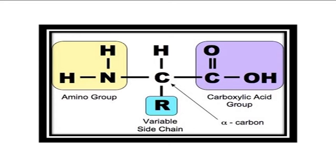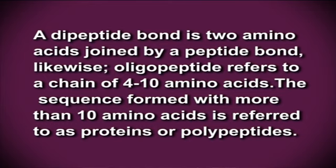Primary structure. Amino acids, as the name itself indicates, contain both a basic amino group (NH2) and an acidic carboxylic group (COOH). The di-functionality of these two groups allows the individual amino acids to join together in long chains by forming peptide bonds. It is the bond which is formed between the amino group (NH2) of one amino acid to the carboxylic group (COOH) of another amino acid. A di-peptide bond is two amino acids joined by a peptide bond.